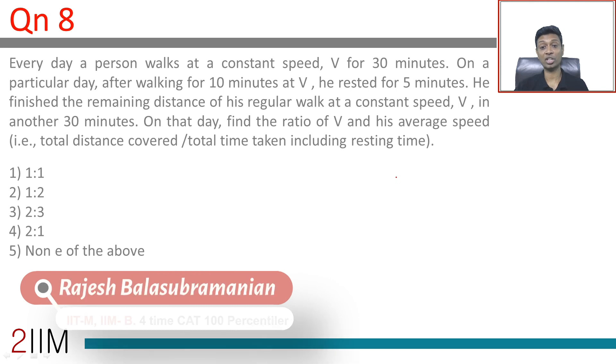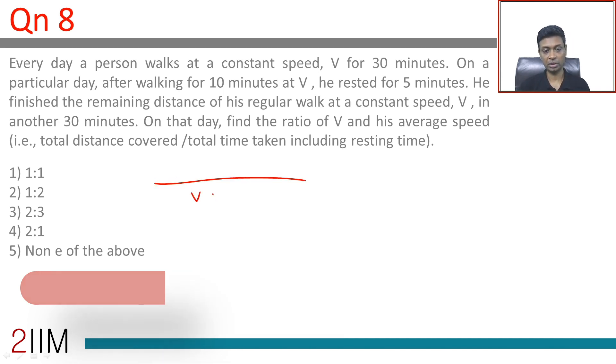Every day a person walks at a constant speed v for 30 minutes. On a particular day, after walking for 10 minutes at v, he rested for 5 minutes.